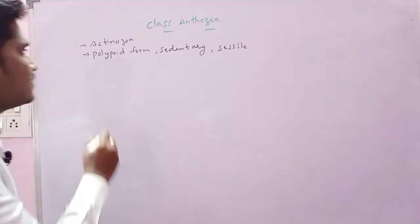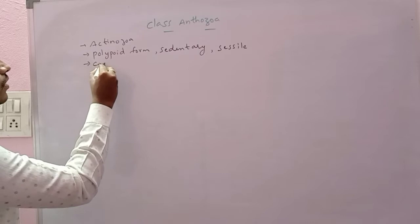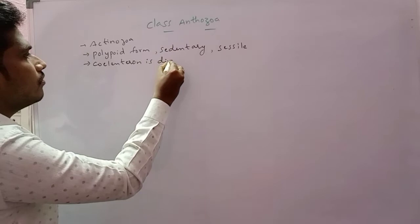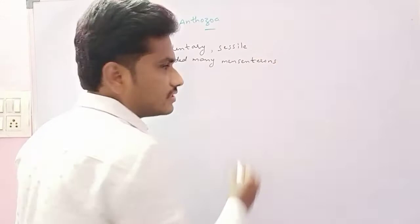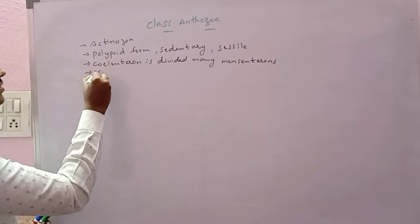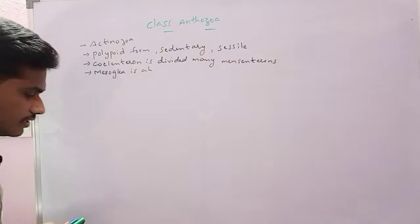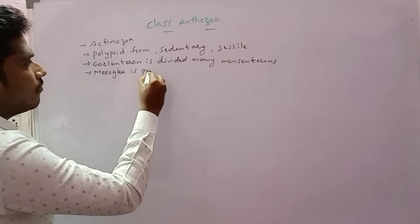And coelenteron is divided into many mesenteries. That means many divisions particularly. And then mesoglea is present here particularly in this anthozoans. Mesoglea is present.